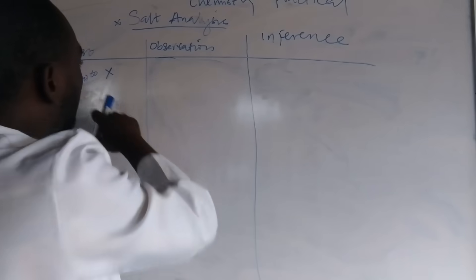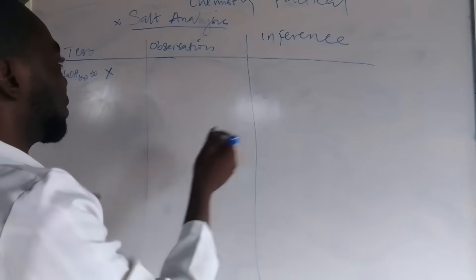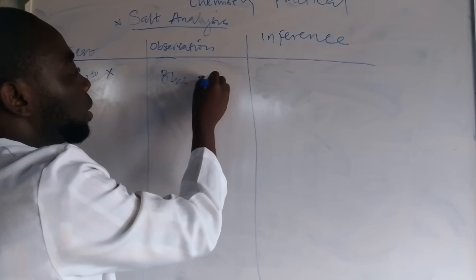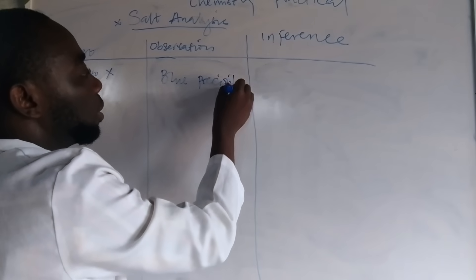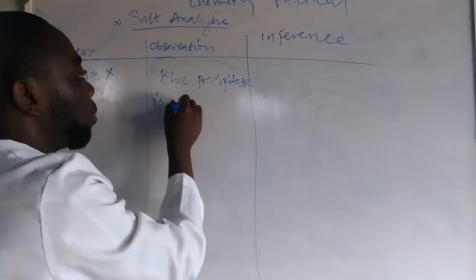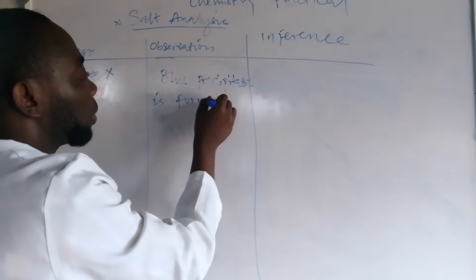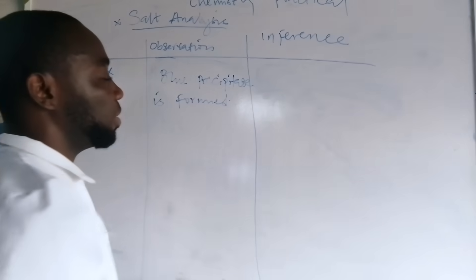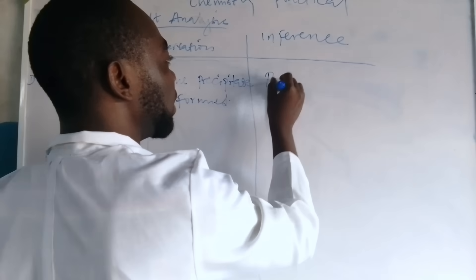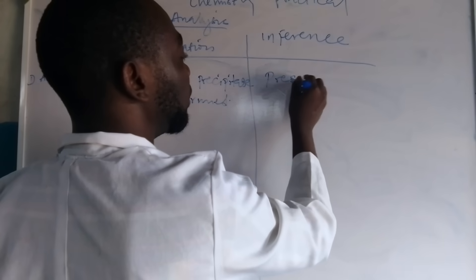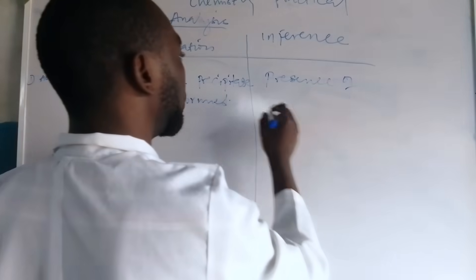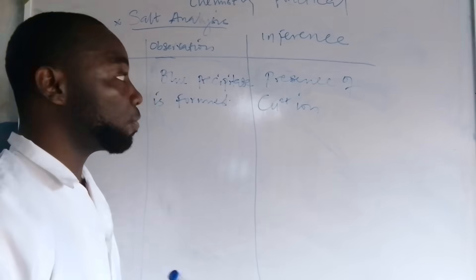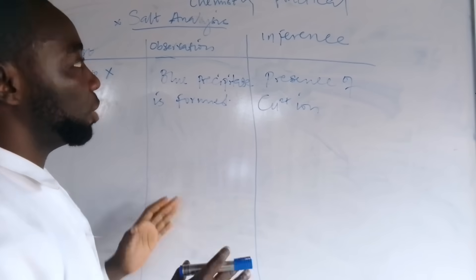Now, we added sodium hydroxide to X. Our observation: blue precipitate is formed. Under the inference: presence of copper two ion.